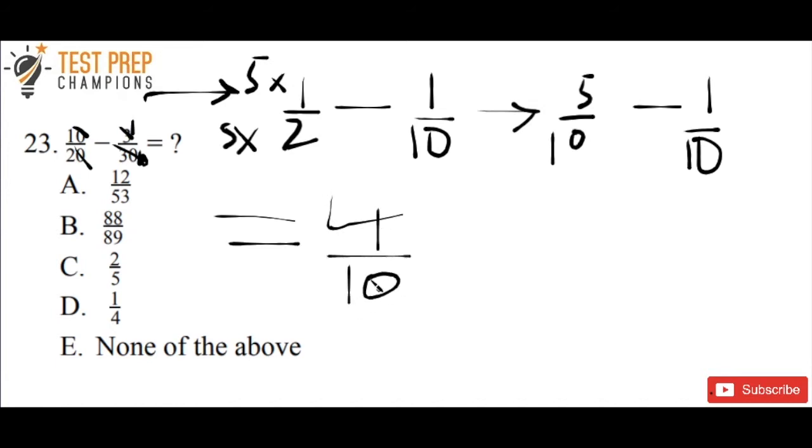Whenever you do subtraction with common denominators, you just take the numerators and subtract them. So 5 minus 1 is 4, and you leave the denominator the same. You don't try to do 10 minus 10—that would be an error because you would get 0, and you can never divide by 0.